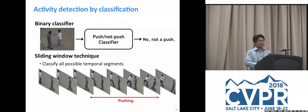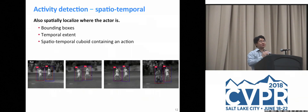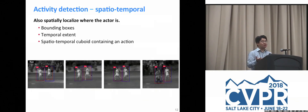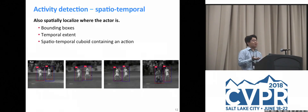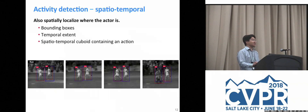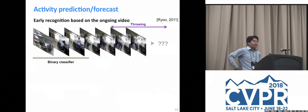There is also the problem of spatial-temporal detection, where we are interested in spatially localizing where the actor is — not just providing the time interval, but also knowing where the actor is in terms of bounding boxes extended over the temporal domain, forming spatial-temporal cuboids containing an action. There can be multiple such cuboids in a video, and we are interested in detecting all of them.